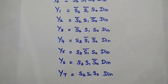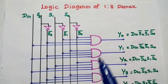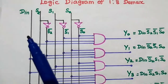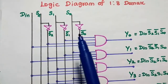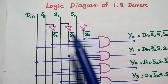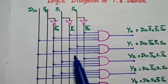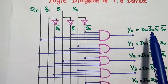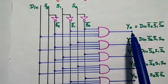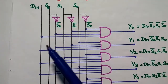Next, we draw the logic diagram for these boolean expressions. In this logic diagram, we have the input data line and the selection lines S2, S2̄, S1, S1̄, S0, S0̄. NOT gates are used to obtain the inverted form of the selection lines. Y0 is obtained as the input data multiplied with S2̄, S1̄, S0̄. An AND gate is used to perform the multiplication of the selection line combination and the input data.